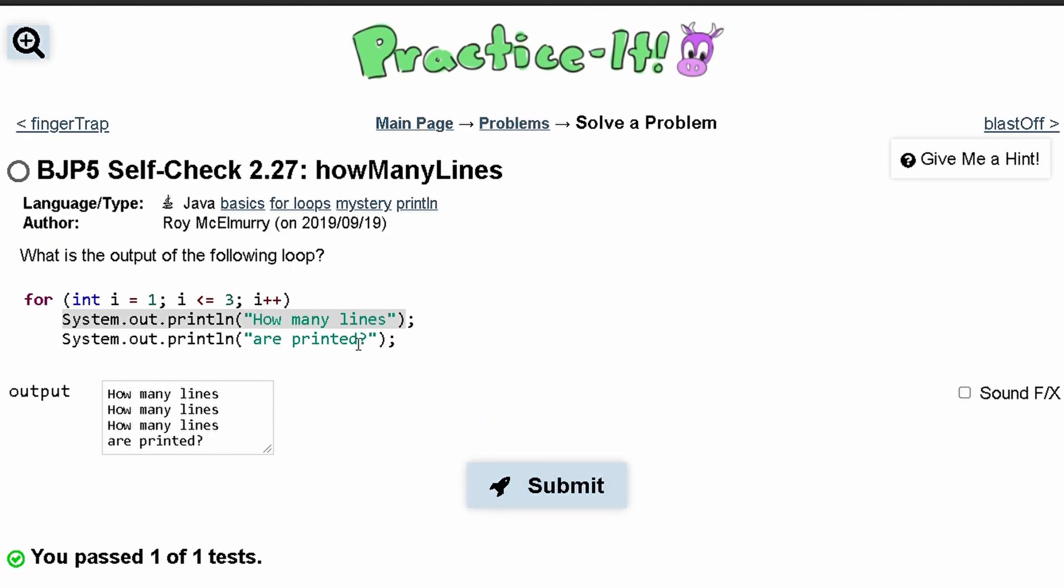Again, the reason why this printed out three times and not are printed, and are printed did not print out three times, is because when there's no brackets around code that is encased in a for loop, a for loop only encases what's directly underneath it. And this is the reasoning for this output.